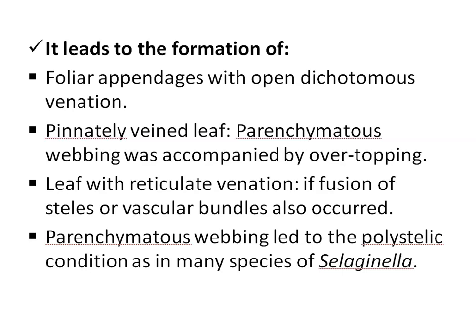Syngenesis leads to the formation of foliar appendages with open dichotomous venation. In this case, the sterile telomes (phylloids) become united only by the development of parenchymatous webbing. Second, formation of a pinnately veined leaf means parenchymatous webbing was accompanied by overtopping. Third, a leaf with reticulate venation. If fusion of the stele or vascular bundle also occurred, it led to a polystelic condition in an open form, as in many species of Selaginella.